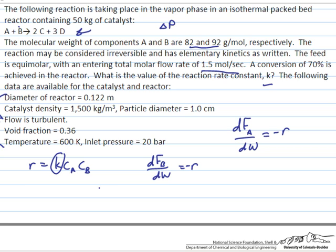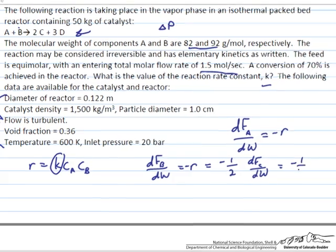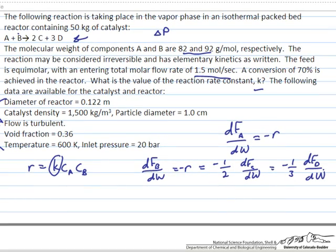We can furthermore write material balances for components C and D, and so I'm just going to do that here, that C and D, that C is formed at twice the rate, which means that we multiply one half by that side of the equation, and D is formed at three times the rate at which B is consumed. So those are our material balance equations, and we're going to want to solve those.